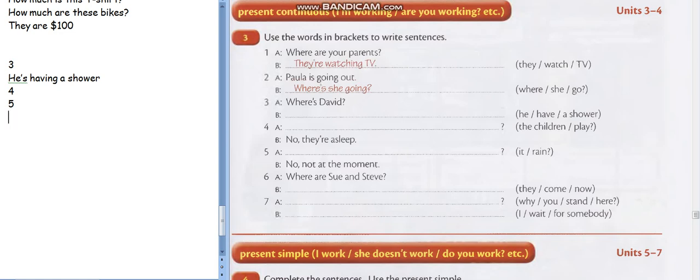Number 5. Is it raining? Great. B: No, not at the moment. Good. Or, no, it isn't raining at the moment. Repeat. No, it isn't raining at the moment. Great job.